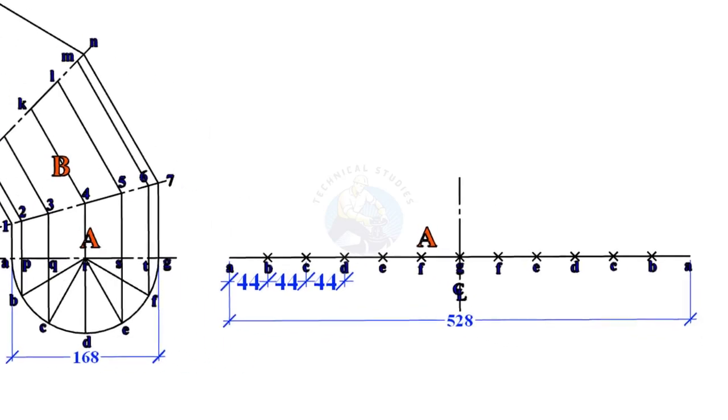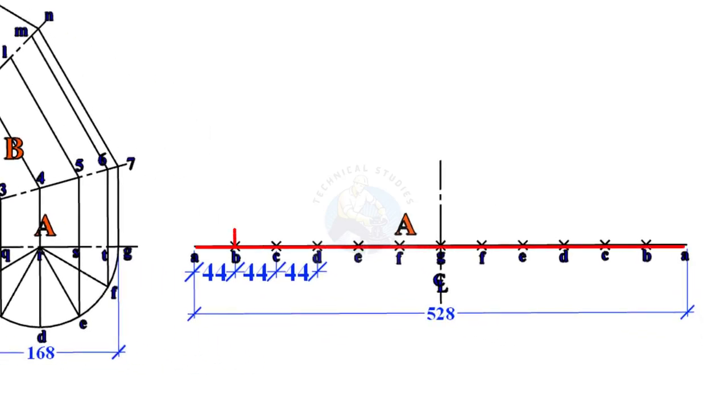Draw a line with a length of 528 millimeters and divide the line to 12 equal parts. Each part will be 44 millimeters long.